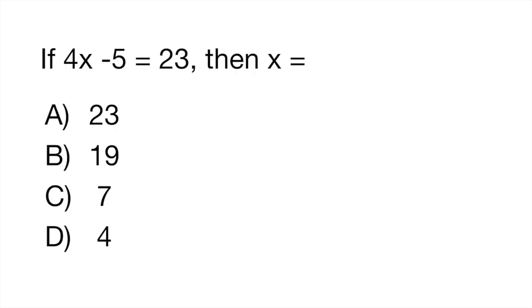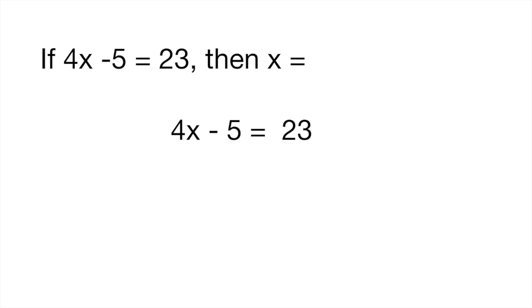If 4x minus 5 is equal to 23 then what does x equal to? All right so that's the equation that you have. What I like to do is first of all tidy things up a little bit on the left side so get rid of that negative 5. How would you do that? You would add 5.